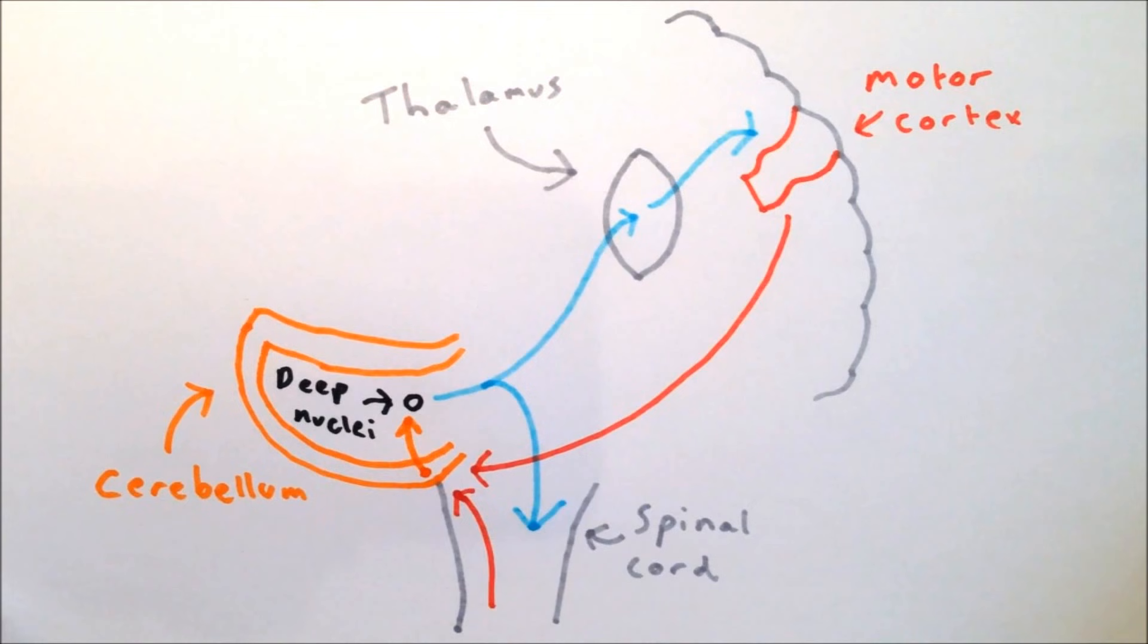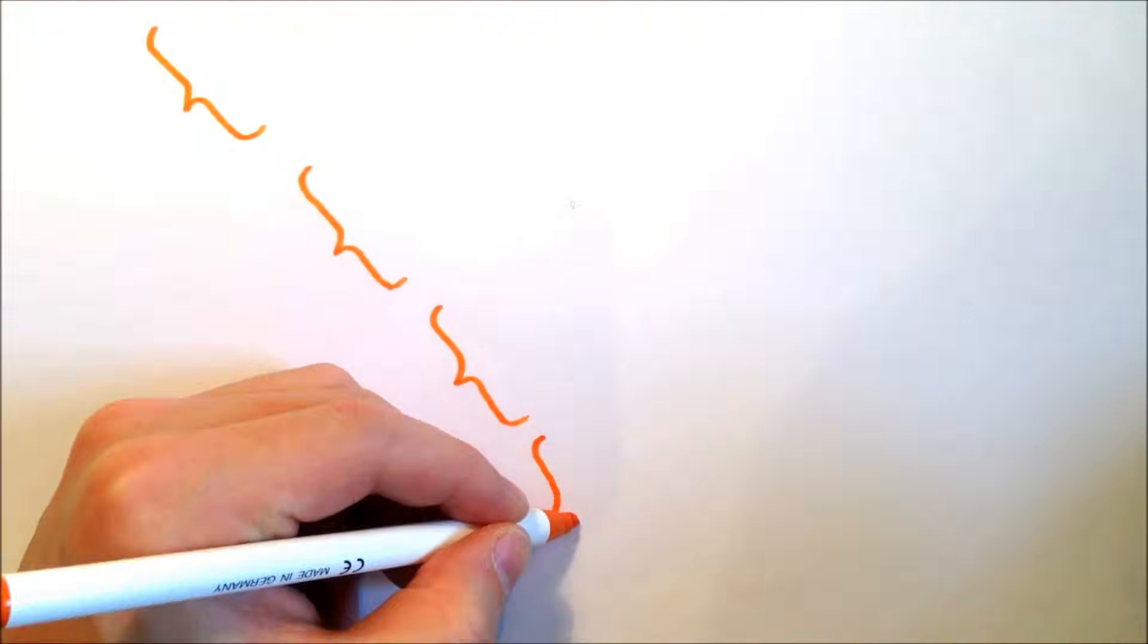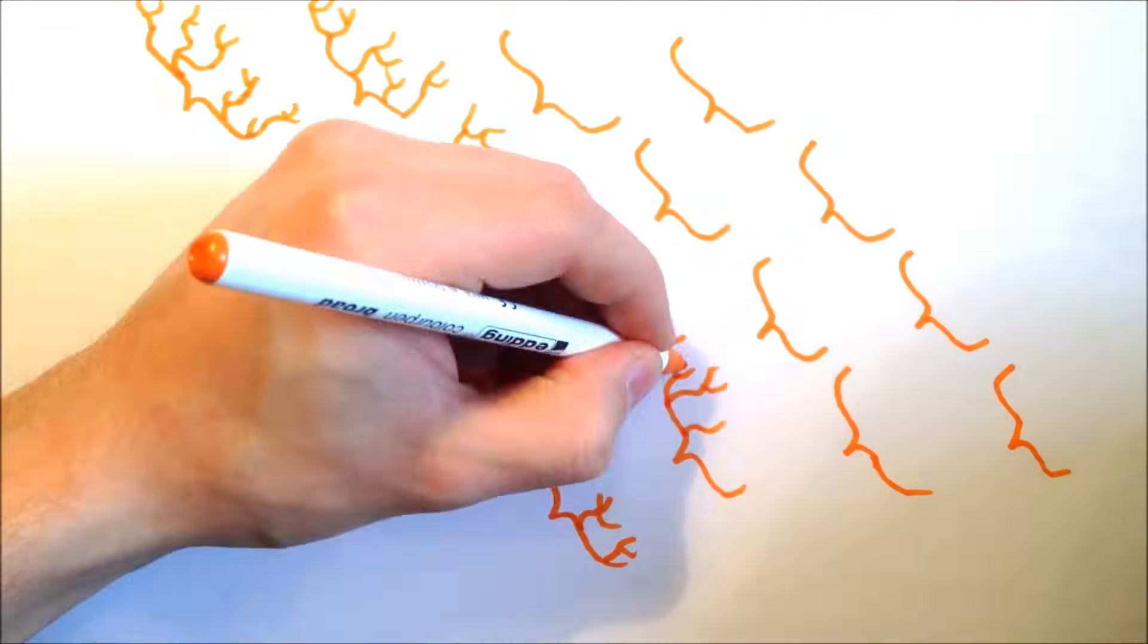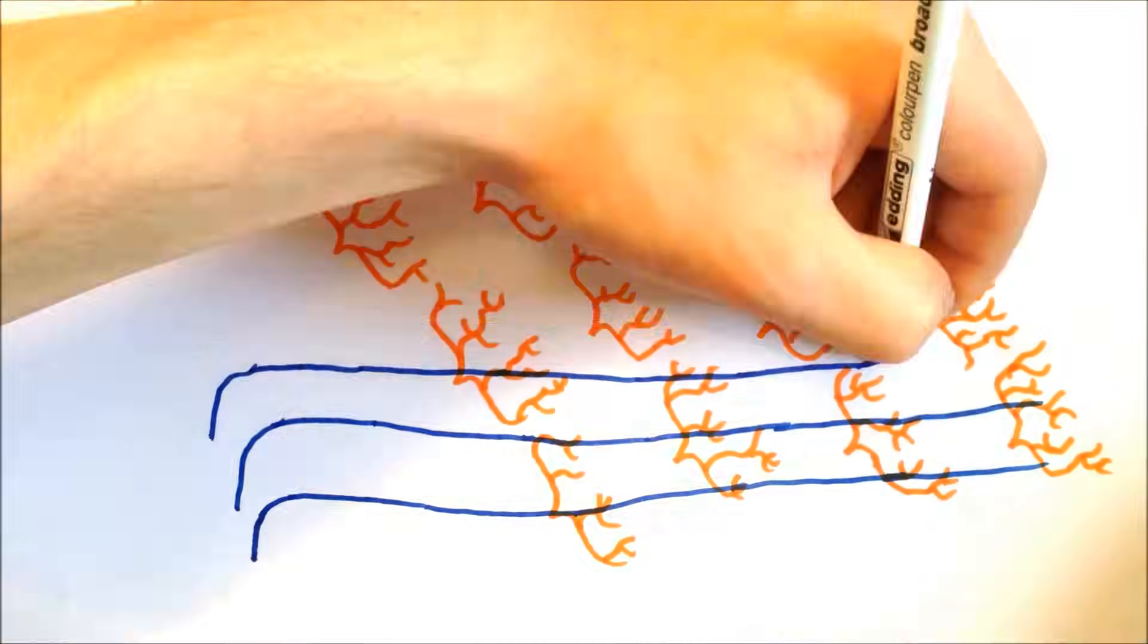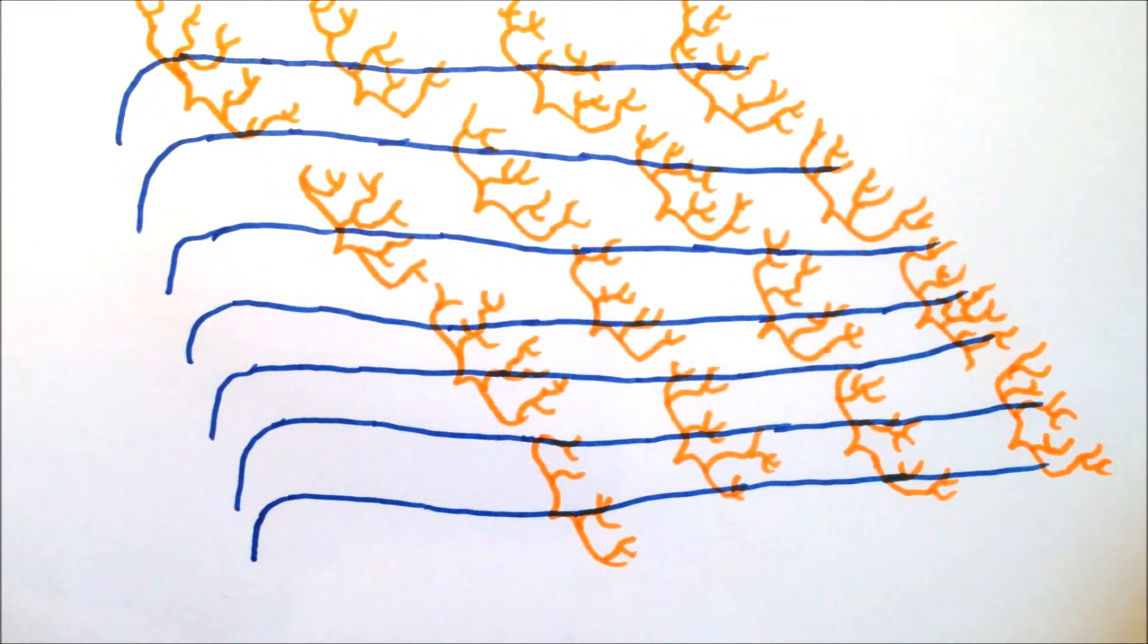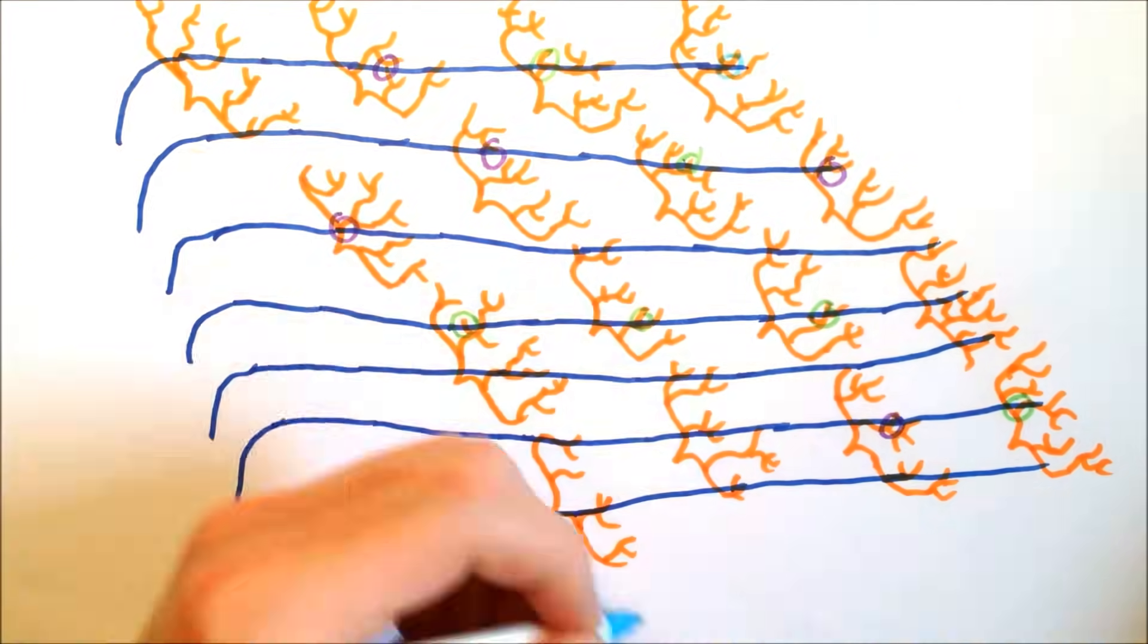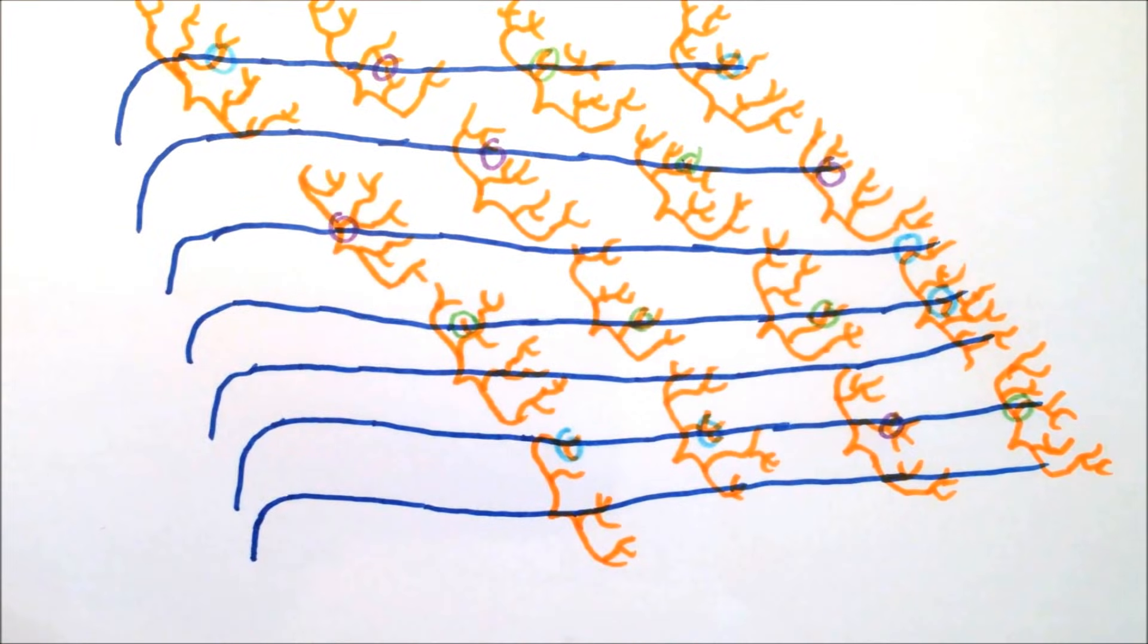How this happens has been the subject of a number of different models. The first family of models focus on the Purkinje cell parallel fiber synapse. We can see that in the outermost layer of the cerebellar cortex, the Purkinje cells and parallel fibers form a dense perpendicular matrix, and these synapses can be individually altered through LTD.